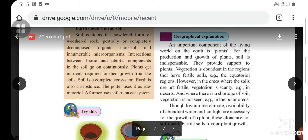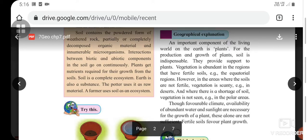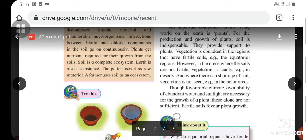Geographical explanation: An important component of the living world on earth is plants. For the production and growth of plants, soil is indispensable. They provide support to the plants. Vegetation is abundant in regions that have fertile soils, for example the equatorial regions. However, in areas where soils are not fertile, vegetation is scanty, for example in deserts.